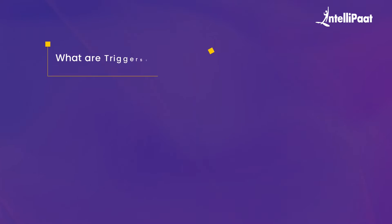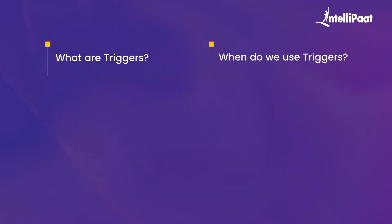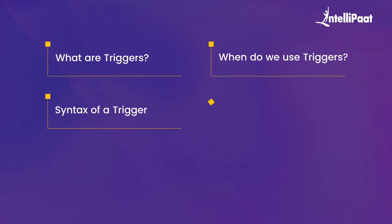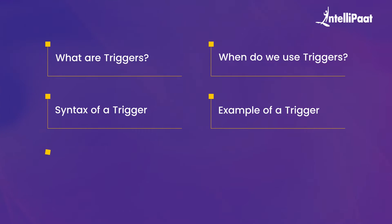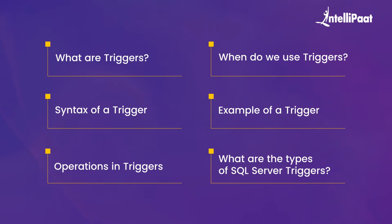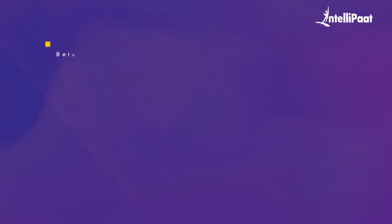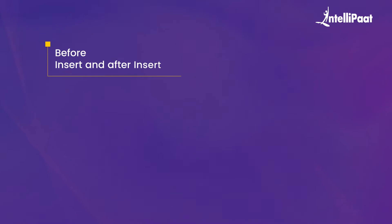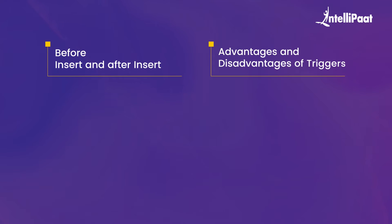Firstly, what are triggers? Then we talk about when do we use triggers. Then we're going to look at the syntax of a trigger, followed by an example of a trigger. Then let's look at operations in triggers and what are the types of SQL Server triggers. After that, we'll talk about before insert and after insert, and we'll look at the advantages and disadvantages of triggers. And with that, we'll conclude.